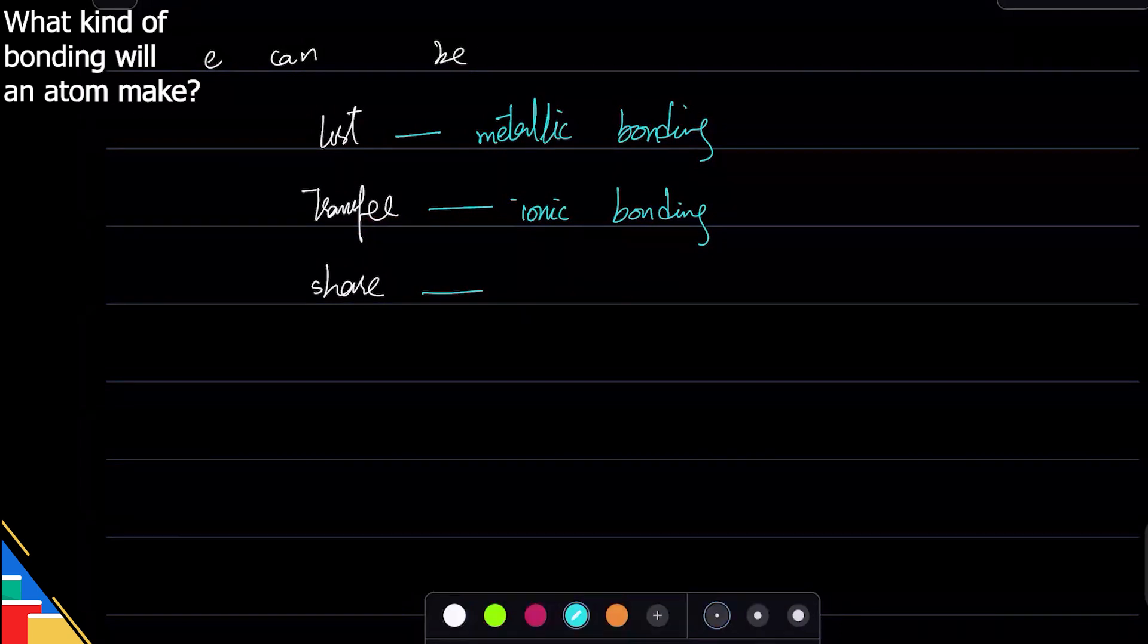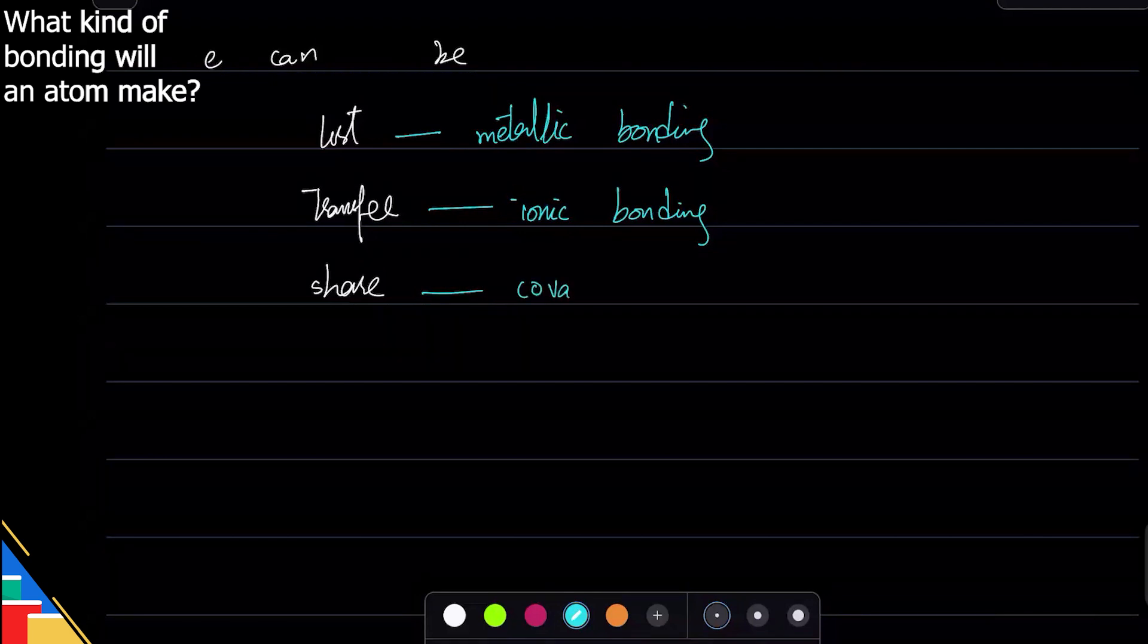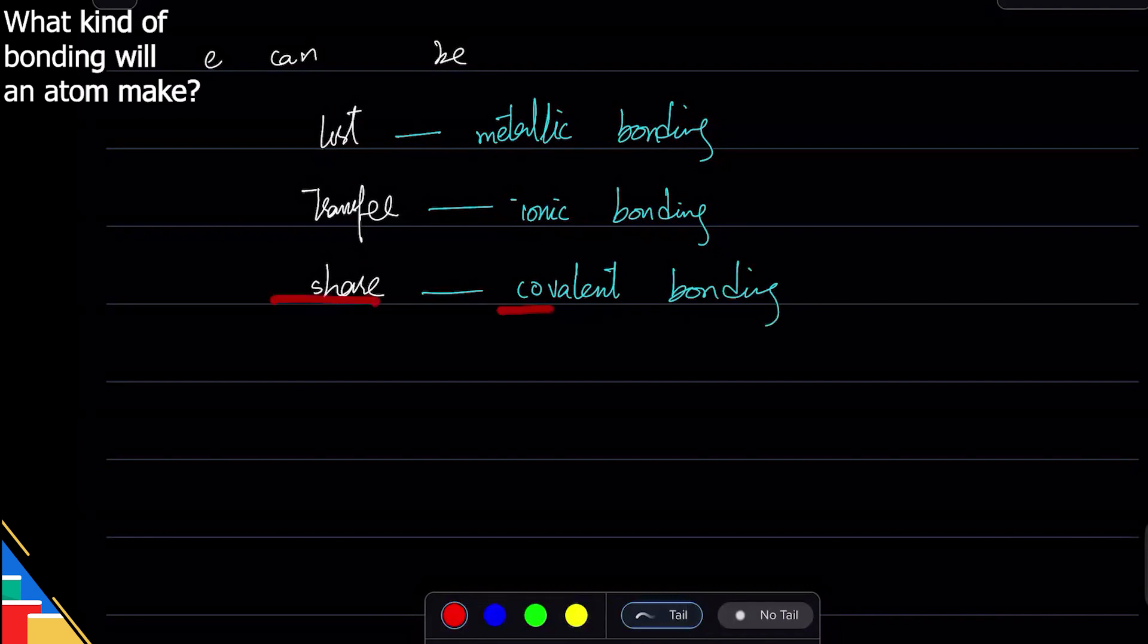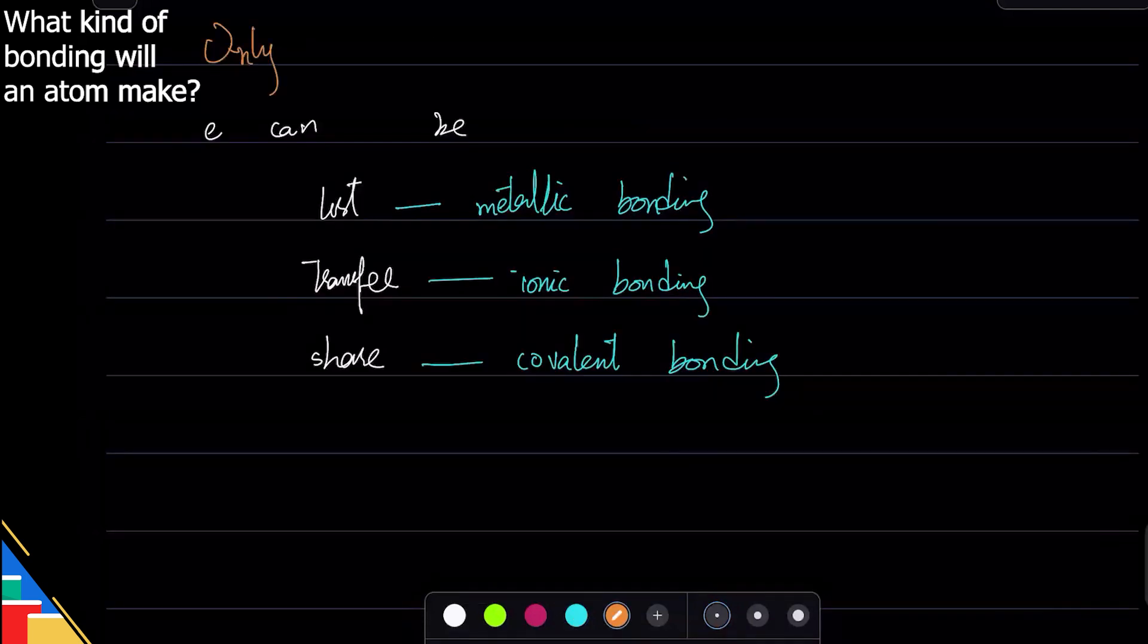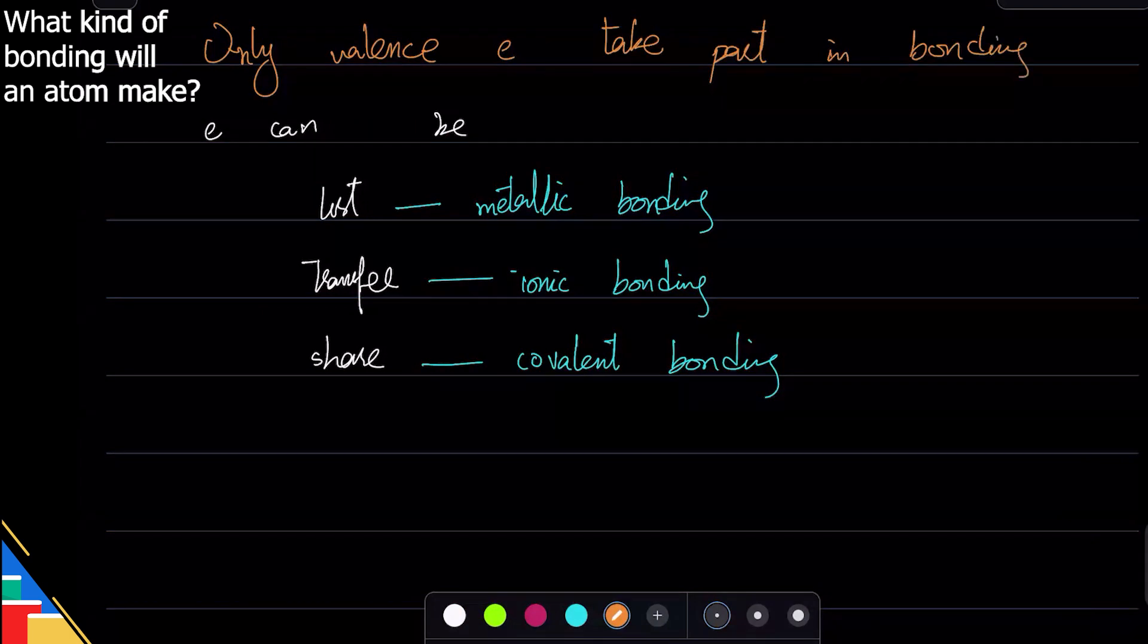The third one is when they share, and sharing happens in the last shell. The last shell is called the valence shell. That's why this is called covalent bonding: 'co' means sharing and 'valent' means last shell. Remember, only valence electrons take part in bonding, so only the last shell.